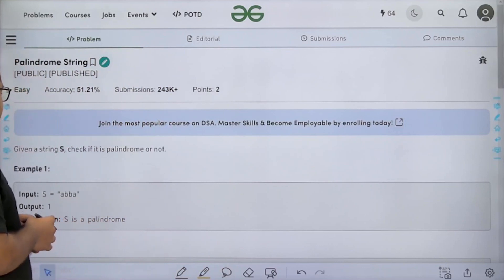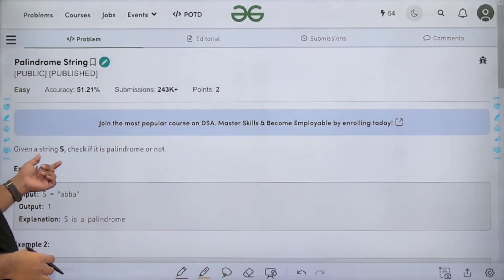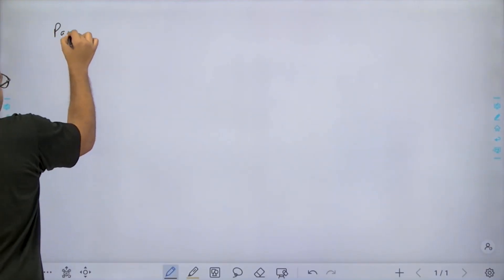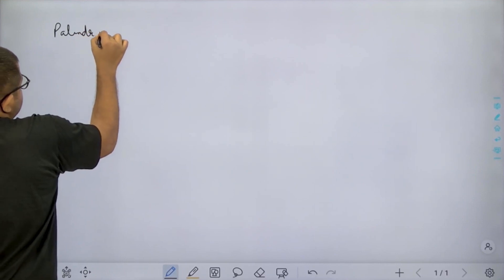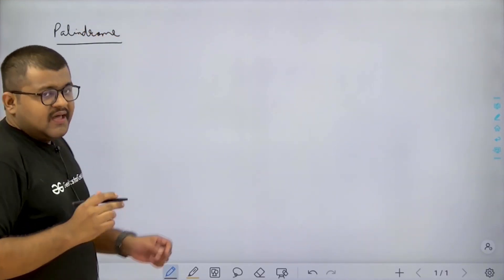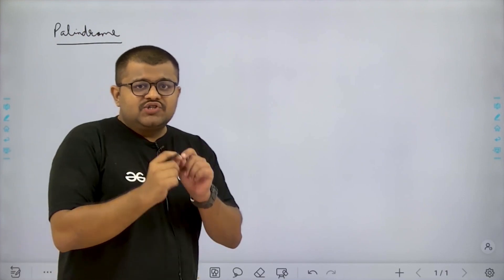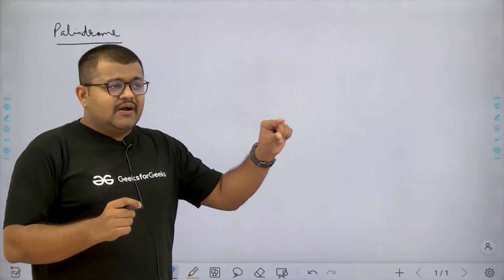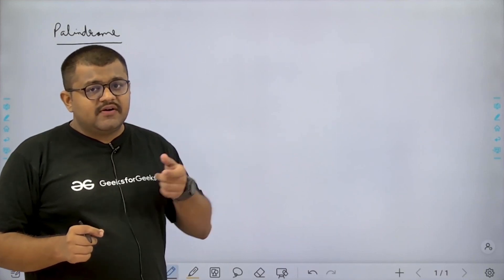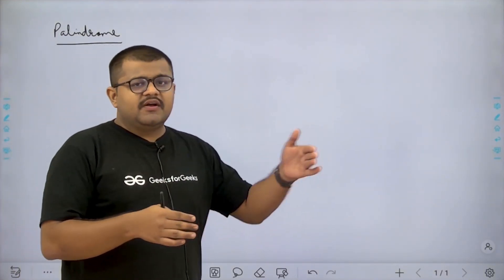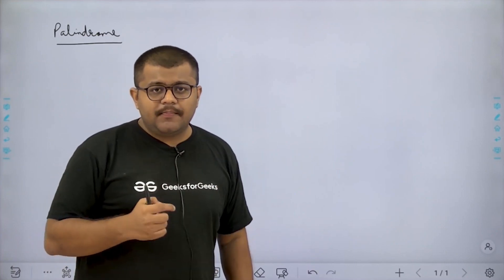What does the question say? It says that given a string S, check if it is a palindrome or not. So basically, when do we call a string a palindrome? The meaning of palindrome is if the string reads the same from start to end as well as from end to start — if it remains the same in reverse order, then it is called a palindrome.